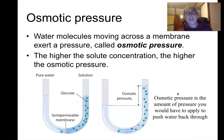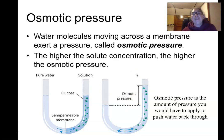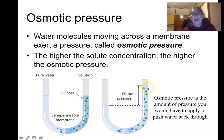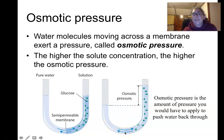When two solutions of different concentrations are on opposite sides of a semi-permeable membrane (permeable to water but not solute), there is a pressure gradient called osmotic pressure. This is measured using U-tubes: pure water on one side, a solute solution on the other. Water moves through the membrane until the pressure of the solution pushing down equals the pressure of the water molecules coming through. The solution with the higher solute concentration exerts greater osmotic pressure.